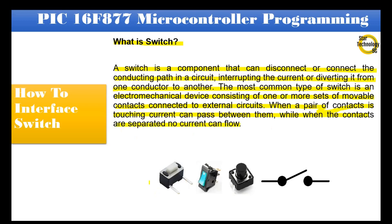As you can see in the diagram, here is a switch. This is another type of switch, and here is another type of switch. Here is the symbol of a switch — it has two metal parts, one of which is movable. When we press the switch, electric current passes from one terminal to the other terminal. This is the electronic symbol of a switch.